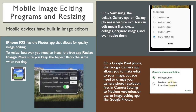Mobile devices have built-in image editors. iPhone iOS has the Photos app that allows for quality image editing. To resize, however, you need to install the free app, Resize Image. Make sure you keep the aspect ratio the same when resizing. On a Samsung, the default gallery app on Galaxy phones is feature-rich — you can organize your images and even resize them. On a Google Pixel phone, the Google Camera app allows you to make edits to your image, but you need to change your camera photo resolution first in camera settings to medium resolution, or use an image editing app like Google Photos.